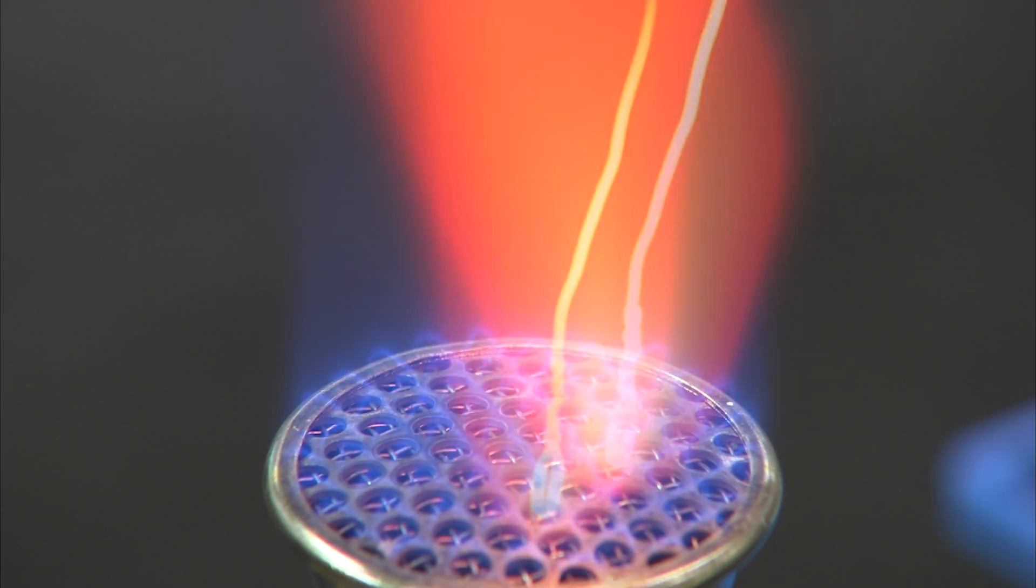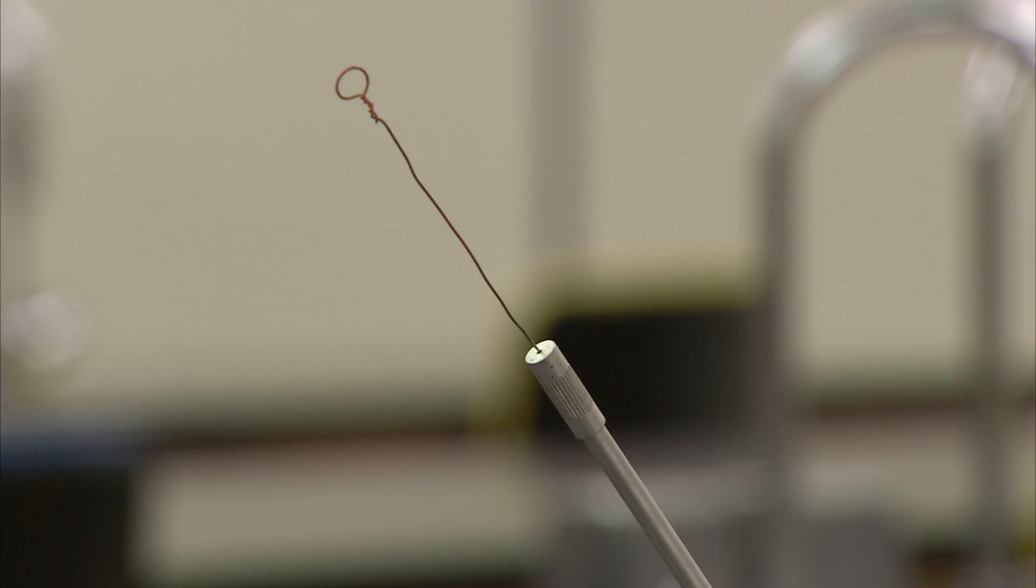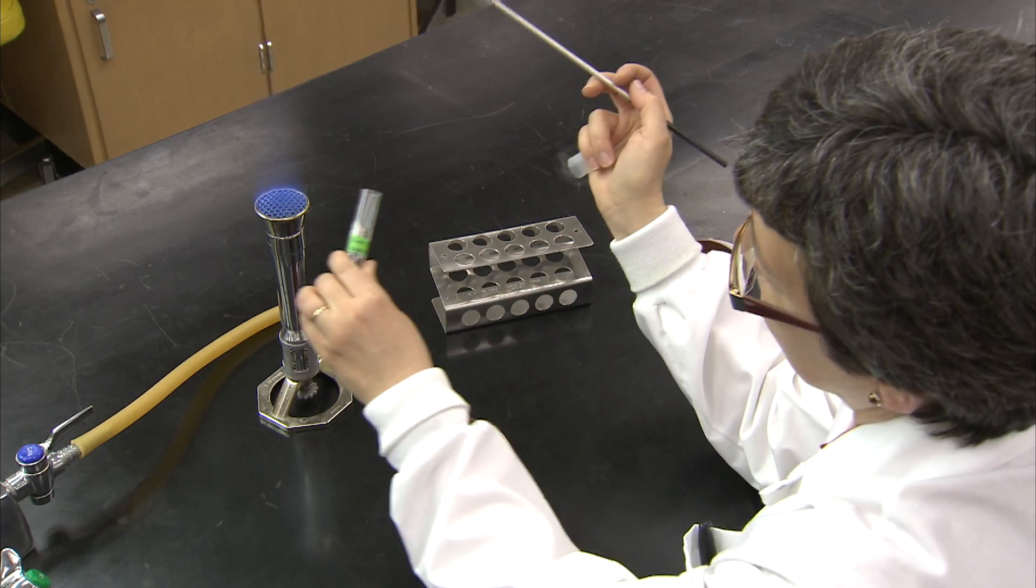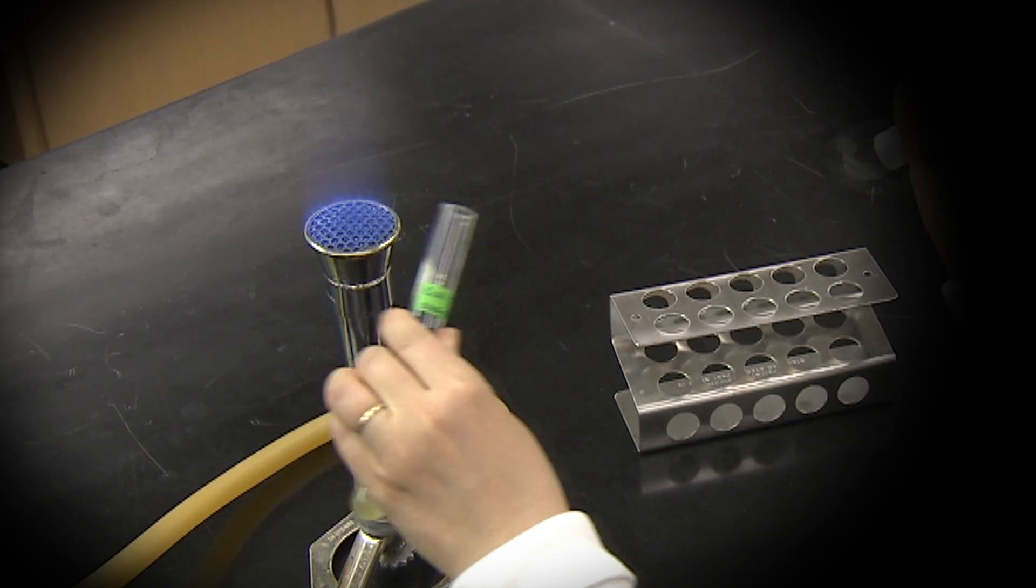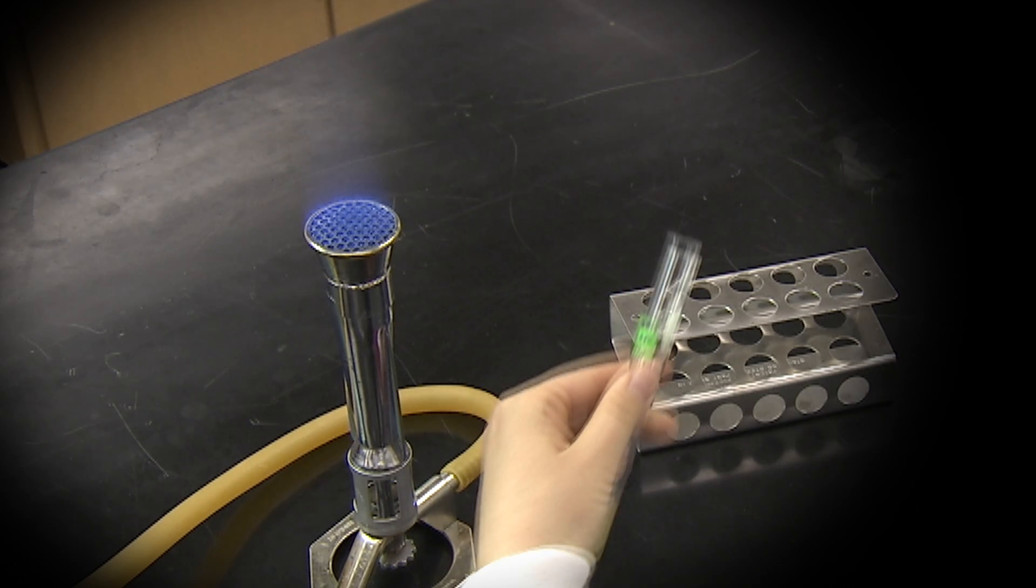The loop is sterilized and allowed to cool. Without putting down the loop, the tube is picked up and the loop holding hand is used to remove the cap. The mouth of the tube is passed into the flame to create an expansion of air in the tube to minimize microorganisms entering the tube.